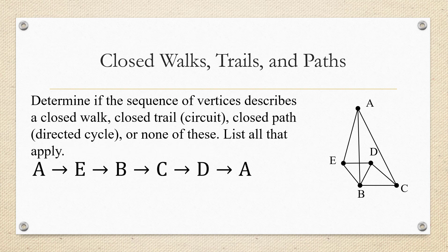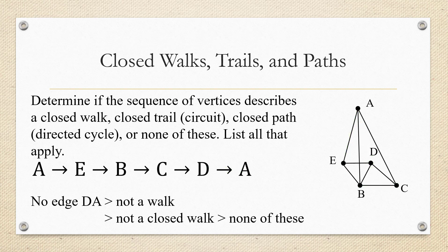One skill we need is to determine if a sequence of vertices describes a closed walk, a closed trail (also called a circuit), a closed path (called a directed cycle), or none of these. Let's look at this sequence: A to E to B to C to D to A. Tracing it on the graph, we go A to E to B to C to D, and then we're supposed to go directly back to A — but there is no edge between D and A. Since even a walk requires staying on the graph, this is not a walk and therefore none of these.